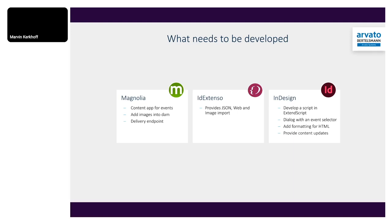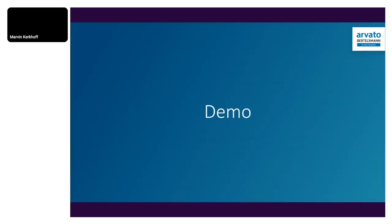What do we need? First, a content app inside Magnolia — the events app — that holds the data, imagery, and text. We need a delivery endpoint, which is standard in Magnolia. We need the ID Extenso framework, which makes it possible to get JSON data for InDesign and download images from the web. Inside InDesign we need a script based on ExtendScript — a JavaScript-based syntax — and a dialogue to select the event, with full HTML formatting support.